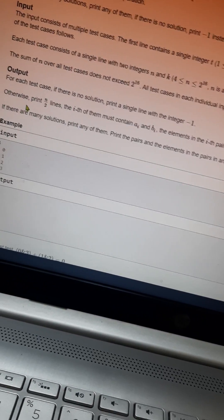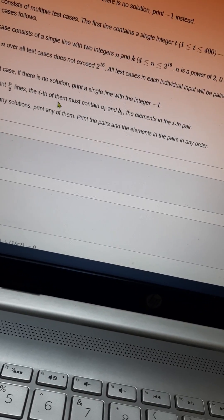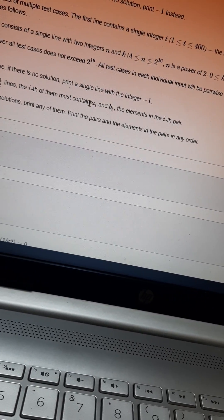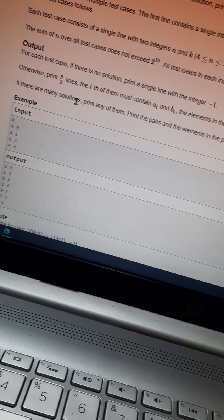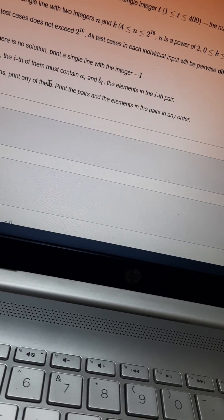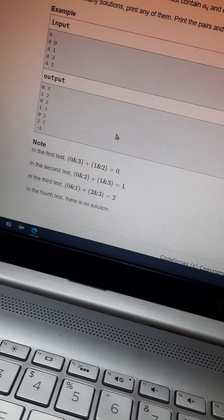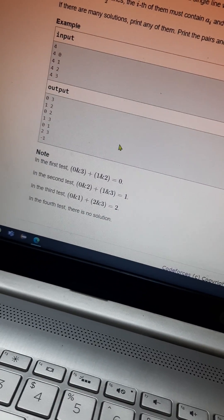Otherwise print n/2 lines. The i-th of them must contain ai and bi, the elements in the i-th pair. There are many solutions, you can print any one of them. Print the pairs and the elements in the pairs in any order. These are the sample test cases.